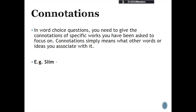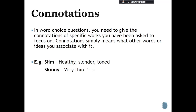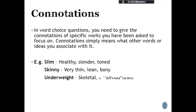We'll apply this to a few examples. Starting with the word 'slim' — three connotations are healthy, slender and toned. A second example: three connotations of the word 'skinny' are very thin, lean and bony. And a third example, 'underweight' — three connotations include skeletal, undernourished and emaciated.